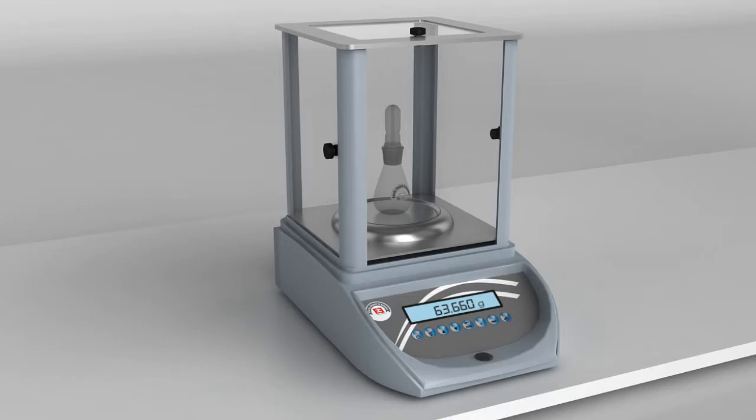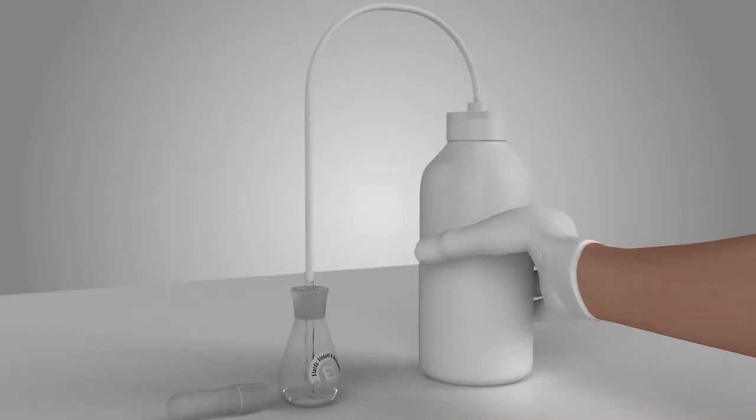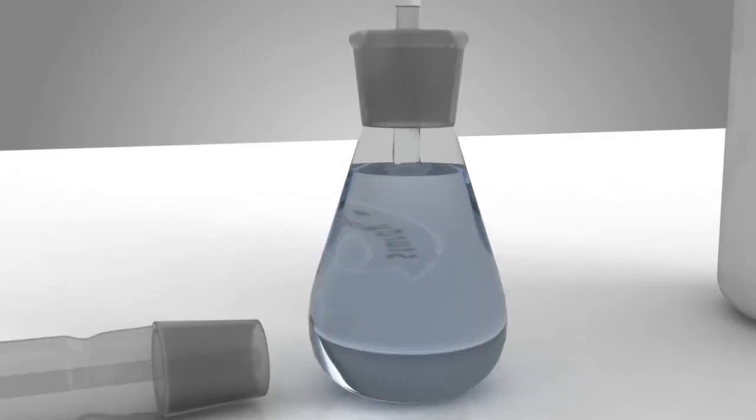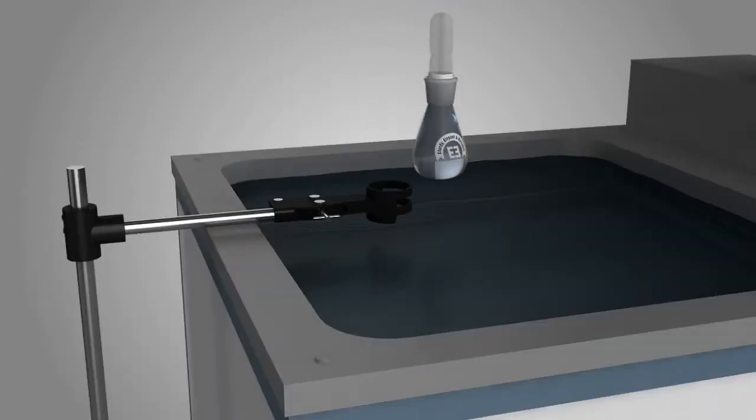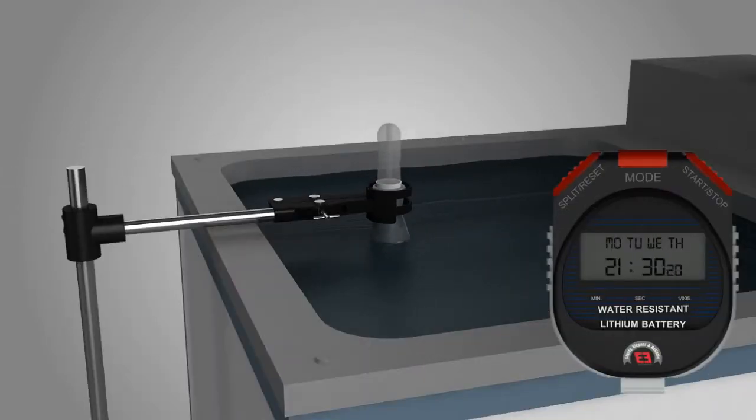Note down the weight of the bottle with stopper as A, which is equal to 63.660 grams. Now the bottle is filled with fresh distilled water, stopper is placed and kept in water bath for 30 minutes at the temperature of 27 degrees Celsius.